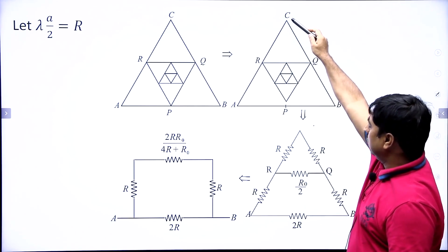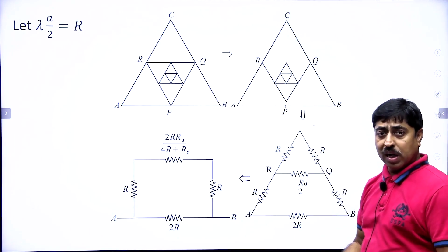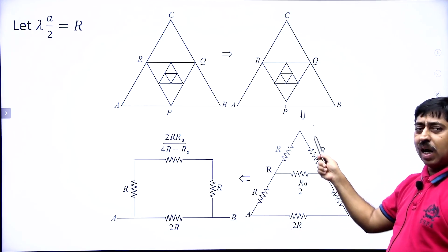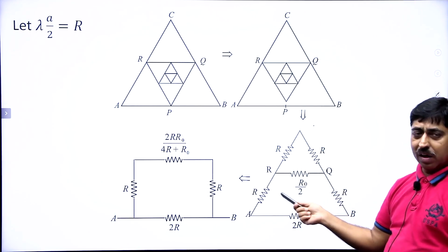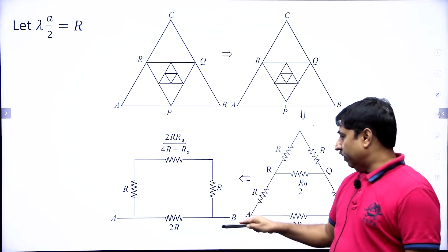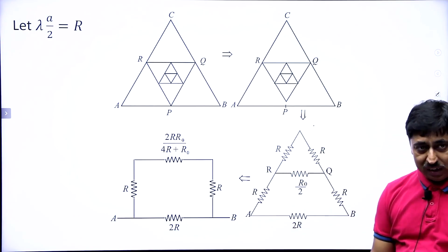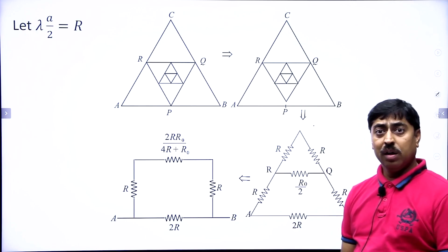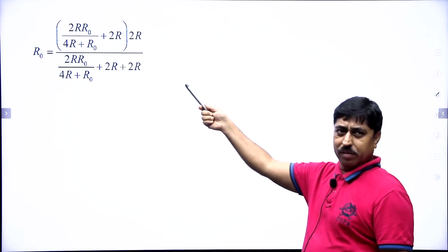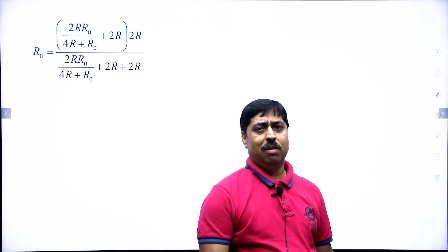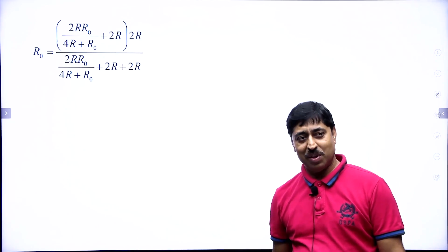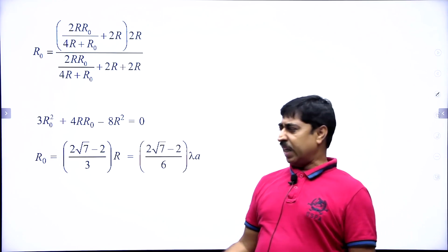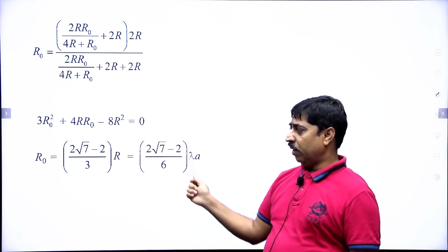This R₀/2 represents the entire inner circuit. Now it is just series-parallel grouping. R and R in series gives 2R; combine with the parallel branch; the remaining sides R are as shown. Doing all those calculations gives an expression equated to R₀. Simplifying this yields a quadratic equation in R₀. Solving the quadratic gives the value of R₀. Since R = λA/2 is a known number, you obtain the required equivalent resistance R₀.